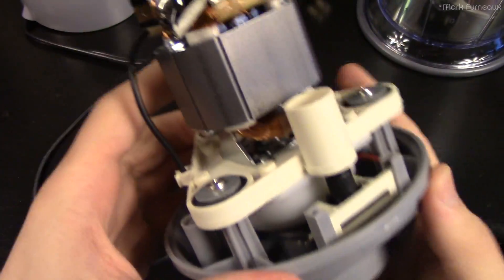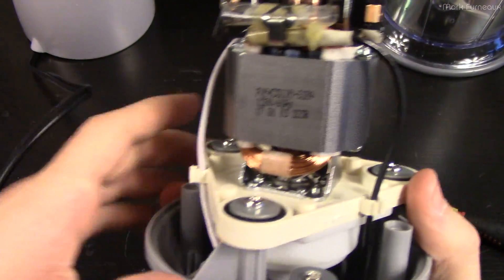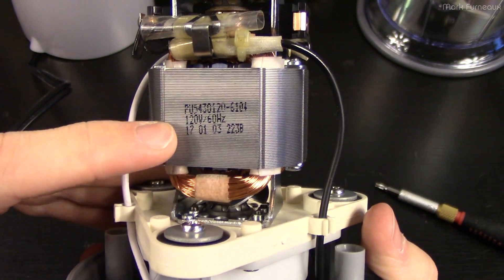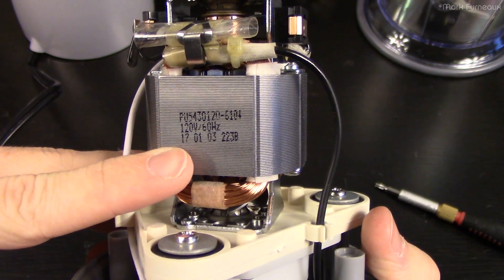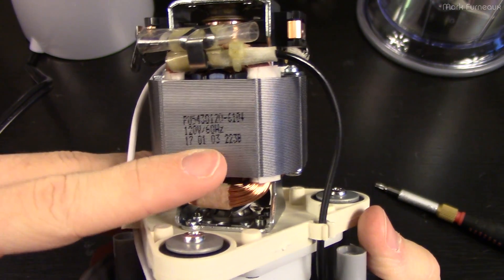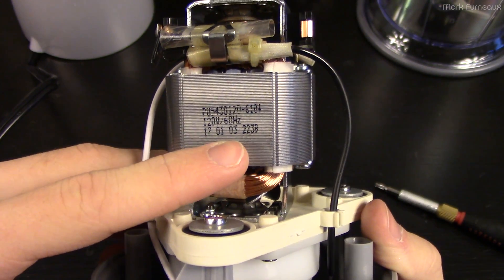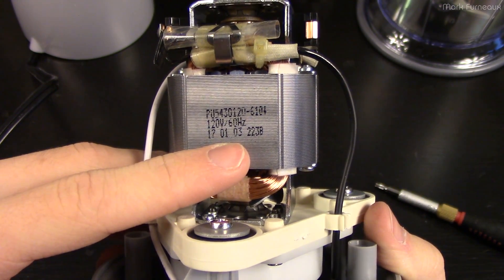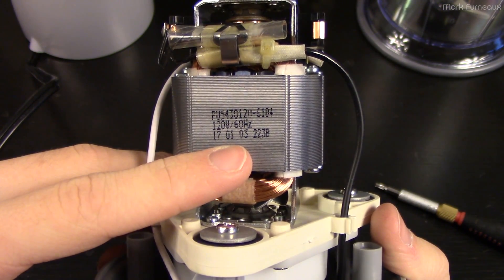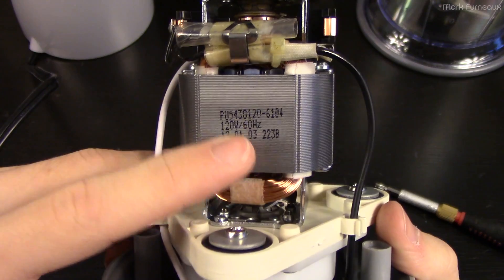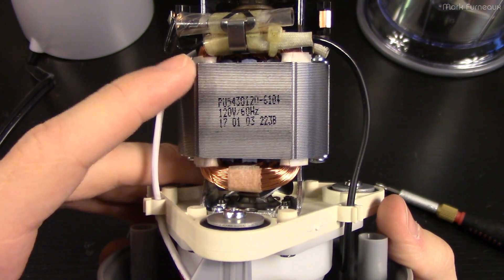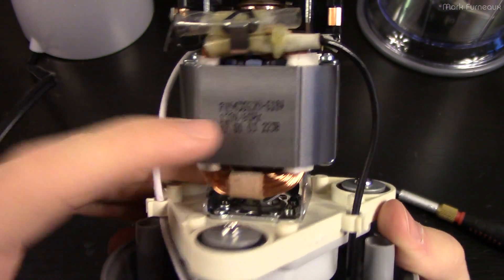And then, of course, we've got the motor itself, which looks relatively nice. 120 volts, 60 hertz. 1701.03, that could be a date code. So it could be January or April or March, sorry. I'm not quite sure. And you can look that up. Probably won't find anything, though.